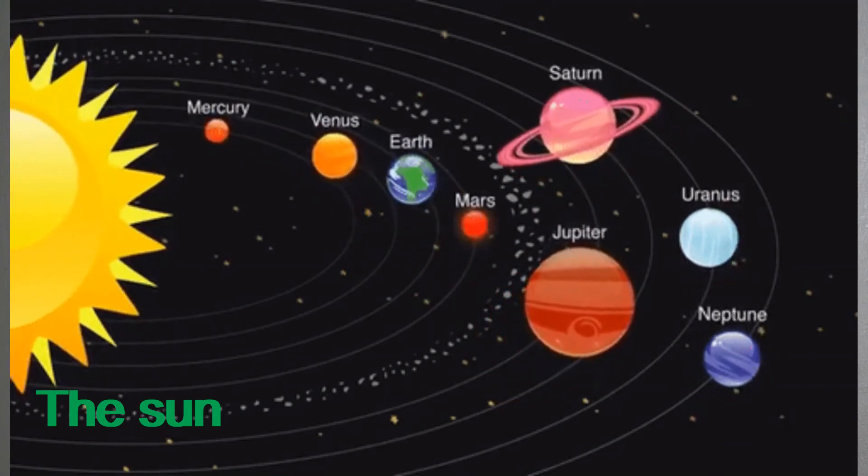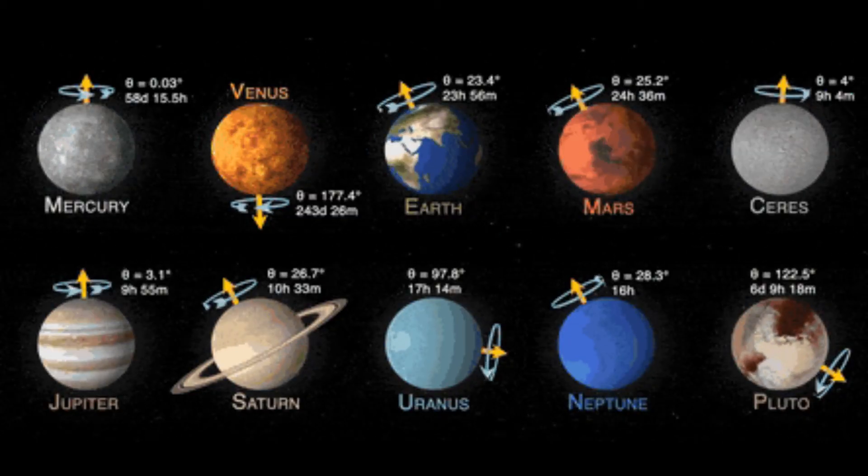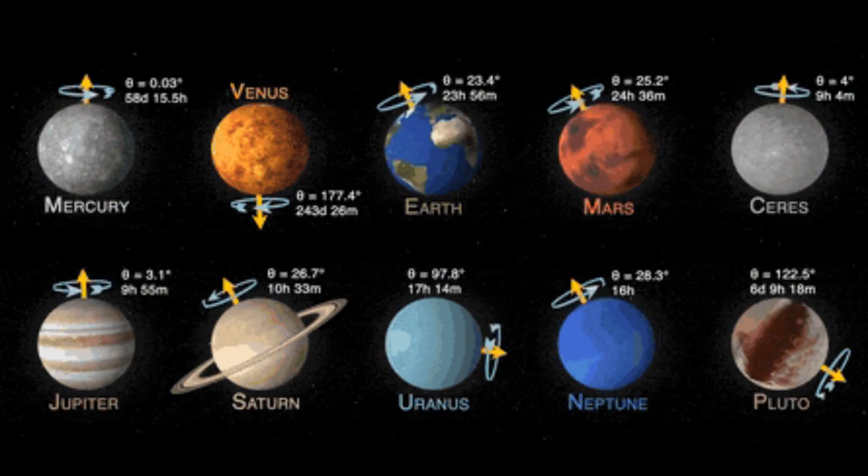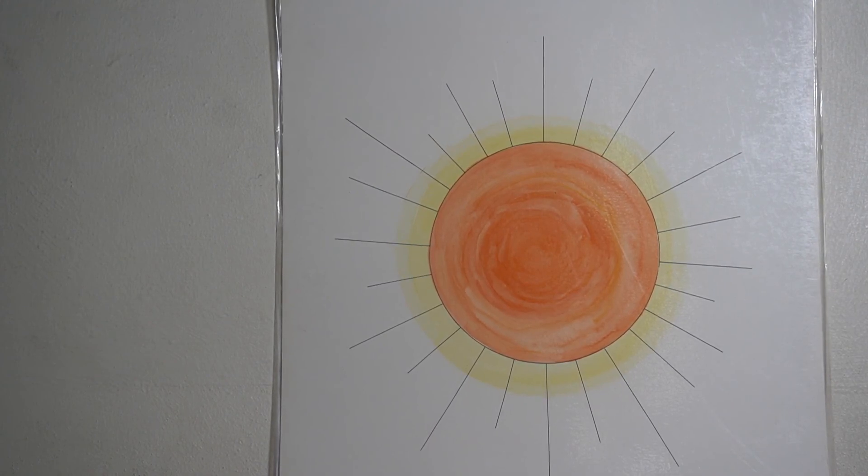That little part of heat and light that we receive from the sun permits life on the earth. If there were no sun, life on earth would not be possible.